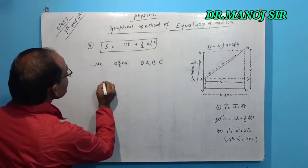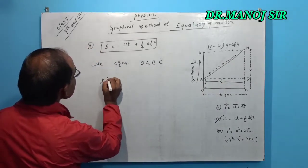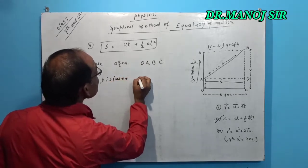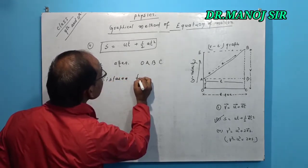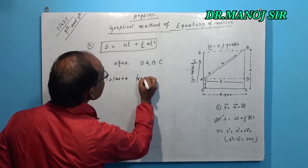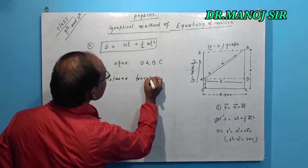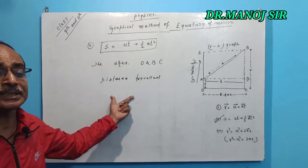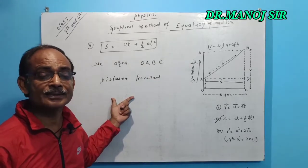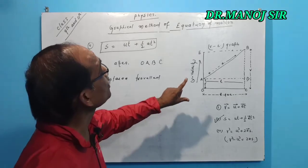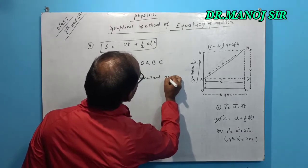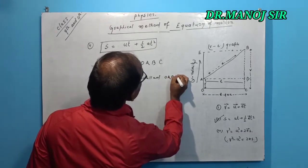Therefore, distance traveled, that is S, area of O A B C.